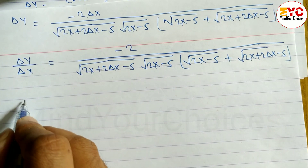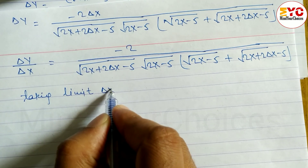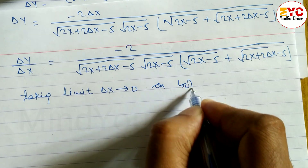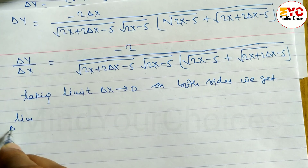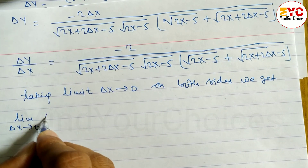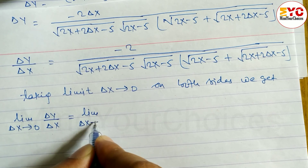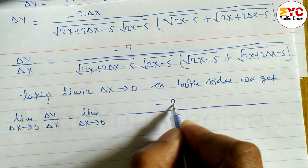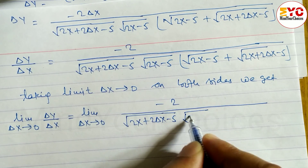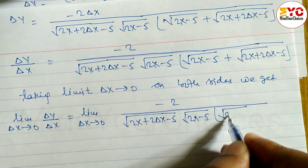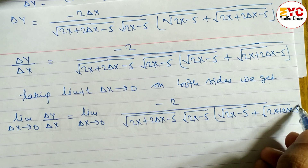Taking the limit of both sides as del x tends to zero, we can write: limit as del x tends to zero of del y/del x equals limit as del x tends to zero of minus 2 over root under (2x + 2 del x - 5) times root under (2x - 5) times the bracket (root under (2x - 5) plus root under (2x + 2 del x - 5)).